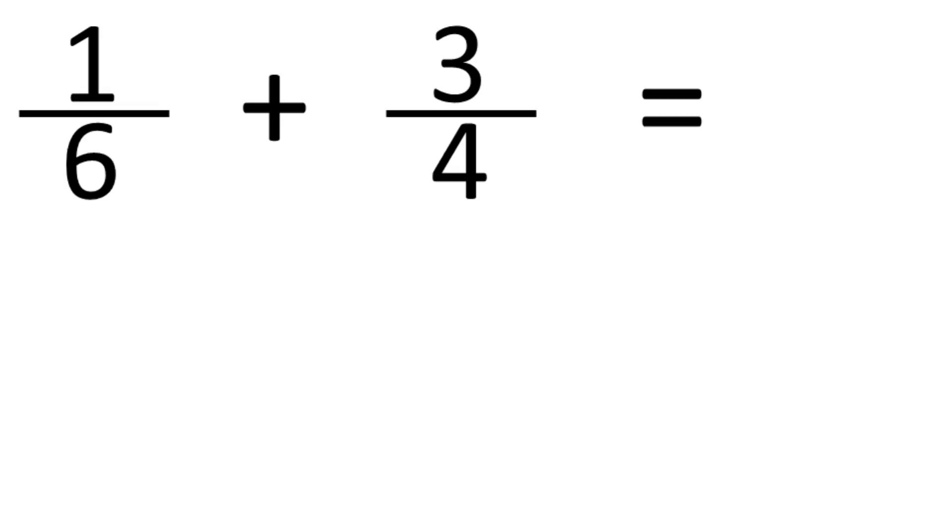If the denominators are different, you need to find a common denominator. The lowest common denominator is the lowest number that's a multiple of both denominators. The lowest common denominator here is 12, as 12 is divisible by both 4 and 6, but no lower number is.